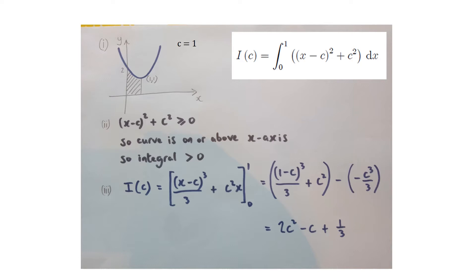Part 2 asks us to show that i(c) is always positive. The integrand is (x−c)² + c², made up of two squares. Squares are always non-negative, so the sum of two squares is at least 0. Thus the curve is on or above the x-axis, so the integral must be positive.